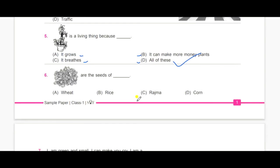Now, the second question is. Look at the picture. Those are the seeds of A, wheat, B, rice, C, rajma and D, corn. So, the answer is D, corn.